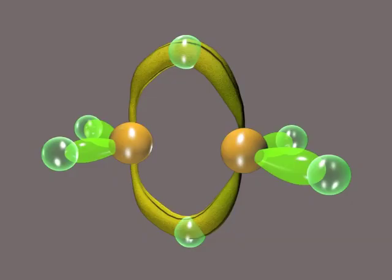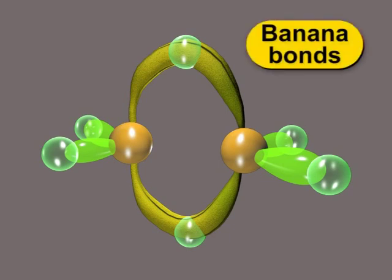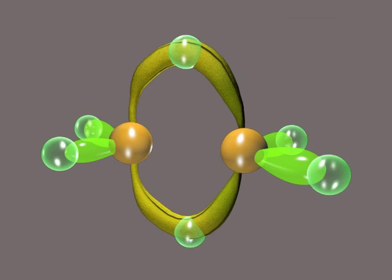The shape of the delocalized electron cloud embracing two boron orbitals and one hydrogen orbital is just like a banana. So, these bonds are called banana bonds. Have a look at the diborane structure shown on the screen.